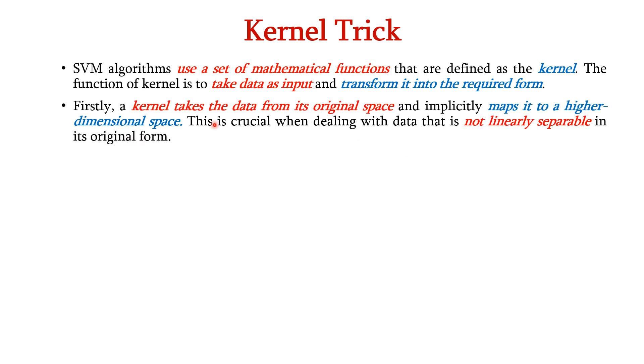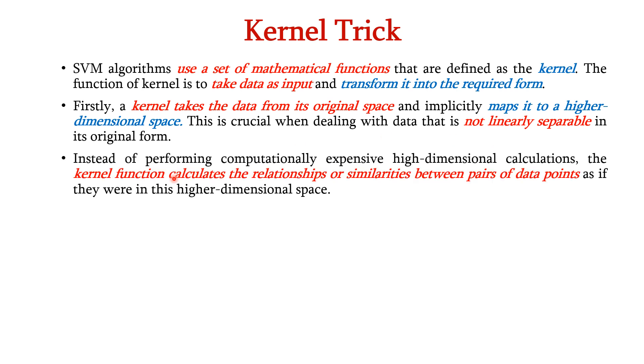Firstly, a kernel takes the data from its original space and implicitly maps it to a higher dimensional space. This is necessary when dealing with data that is not linearly separable in its original form. Instead of performing computationally expensive high dimensional calculations, the kernel function calculates the relationships or similarities between pairs of data points as if they were in the higher dimensional space.